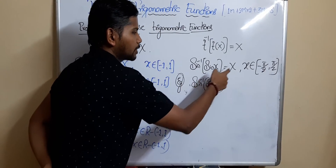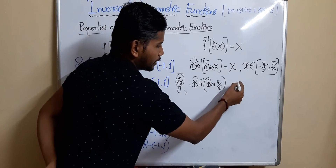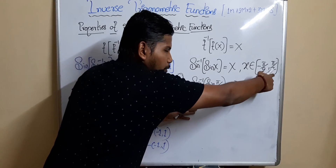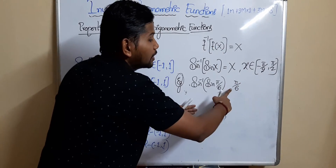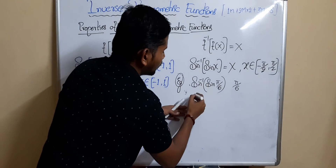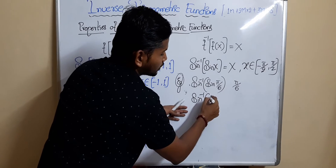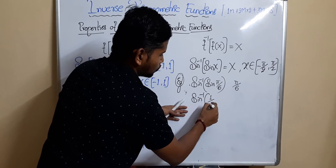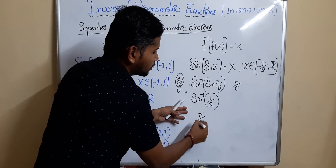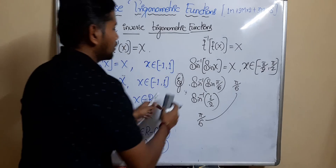According to this rule, sin⁻¹(sin(π/6)) = π/6. Is π/6 in between -π/2 and +π/2? Yes, because 30° is between -90° and +90°. To verify: sin(π/6) = 1/2, and sin⁻¹(1/2) = π/6. We get the same value.